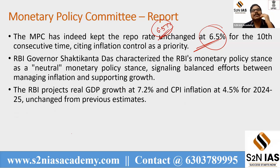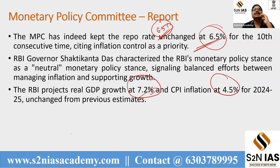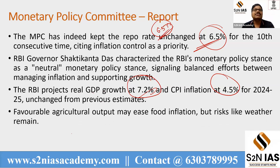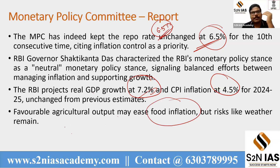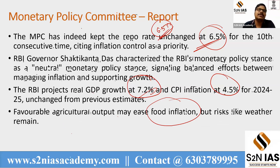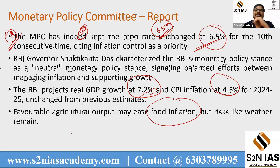The RBI projected real GDP growth at 7.2 percent and CPI inflation at 4.5 percent. Food inflation remains a risk due to weather conditions. Despite favorable agricultural output projections, weather risks remain a concern noted in the recent October MPC report. The MPC kept the repo rate unchanged for the 10th consecutive time, maintaining the neutral policy stance.